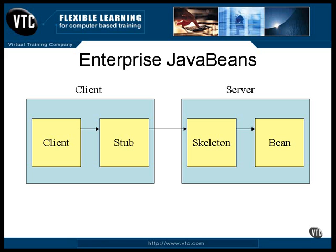This method can call other methods in the same object or in different objects. It can talk to a database. It can do anything any Java program can do, including call methods in other Beans. Eventually, the method will return to the skeleton. The skeleton marshals the return value to be passed back across the communications link and sends the response back to the stub. The stub unmarshals the return value into a local form and uses it as a return value to the client. As far as the client is concerned, a standard Java method call has just returned with a local value.